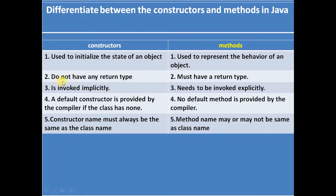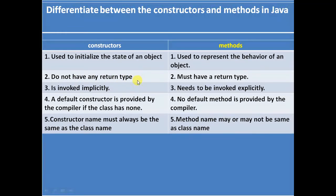Number two: a constructor does not have any return type — we do not give any return type for constructors. In contrast, a method must have a return type, whether it can be void, int, String, any object, or anything.